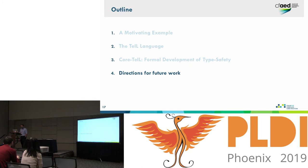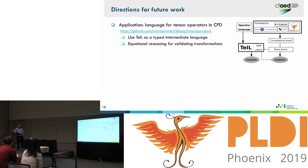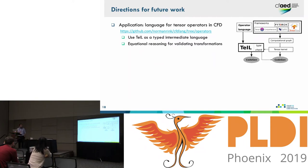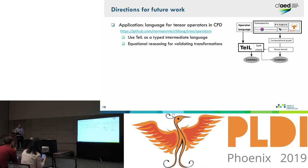That concludes the formal development and specification of Tile and Core Tile. I want to take a few moments to talk about ongoing and future work. Our main application for Tile is in the context of an operator language used in the CFD — Computational Fluid Dynamics — domain. Implementation sources are available on GitHub. We use Tile as an intermediate language: we generate Tile from this operator language, which is embedded in C++, and from Tile we generate low-level C code. We also use some equational reasoning to validate the transformations we do within the Tile backend.